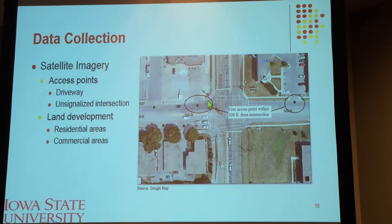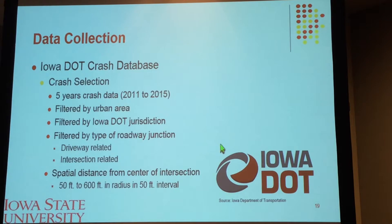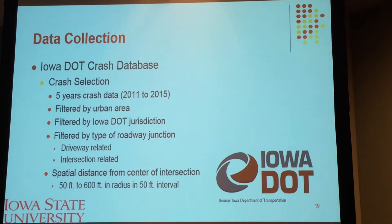This is an example of an intersection with several access points near to it. We manually collected all these access points within a 600-foot buffer. Lastly, we used Iowa DOT crash data with five years of data from 2011 to 2015. Some filtration was done to obtain the final dataset. We first filtered it to just urban areas, then narrowed it down to crashes that occurred on Iowa DOT intersections, which are considered primary roads in the dataset. Lastly, we filtered by type of roadway junction at which the crash occurred. We used spatial distances from the center of intersection, from 50 to 600 feet buffer radius with an increment of 50 feet.